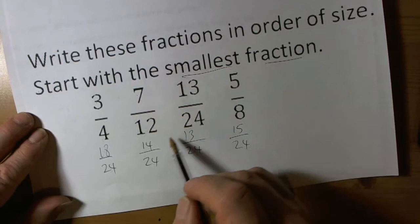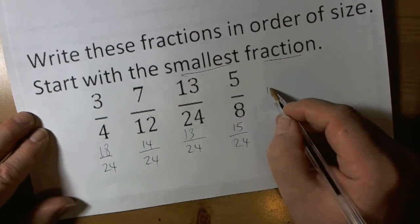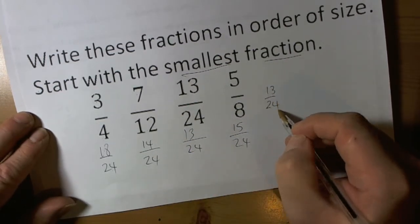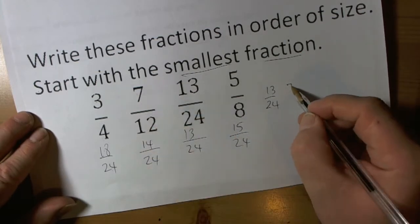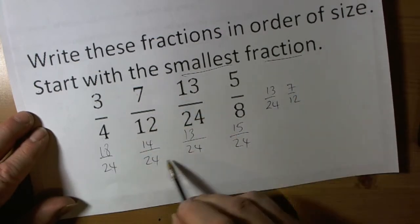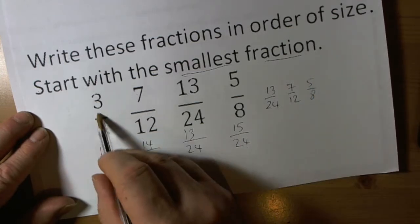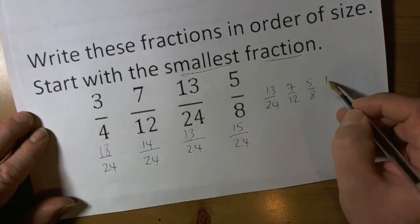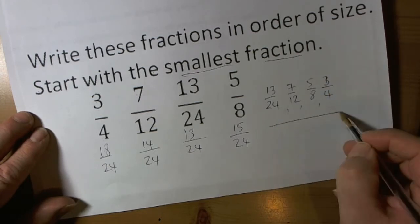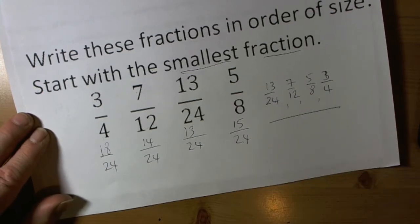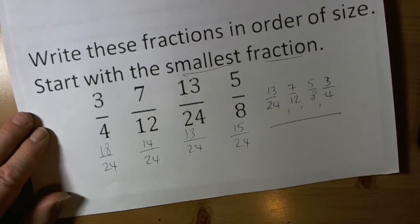So we can see here, let's start with the smallest. We can see here that thirteen twenty-fourths was the smallest, fourteen twenty-fourths was going to be next, so that's the equivalent of seven-twelfths. Fifteen twenty-fourths was next, that's the equivalent of five-eighths. And eighteen twenty-fourths, so that's the equivalent of three-quarters. So that's the fractions in size order, starting with the smallest. So that's a quick reminder of some things to do with fractions.